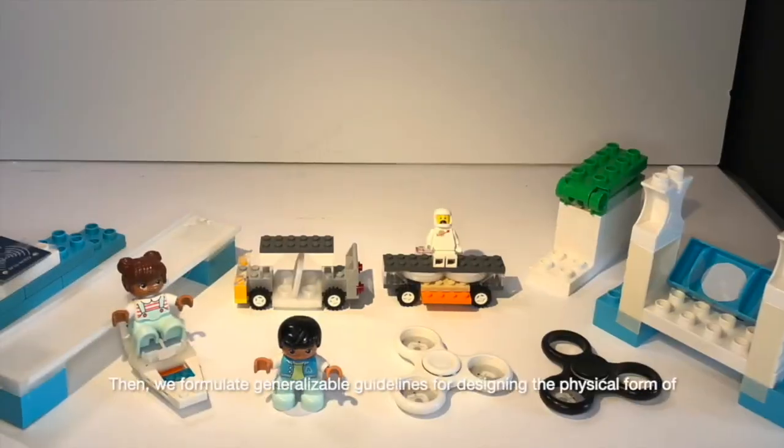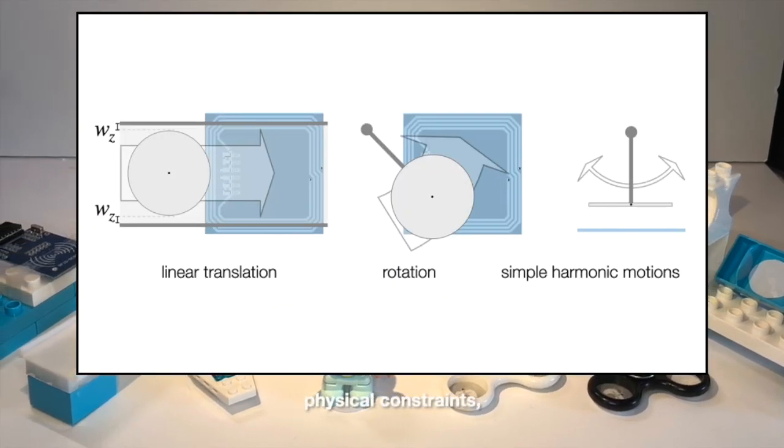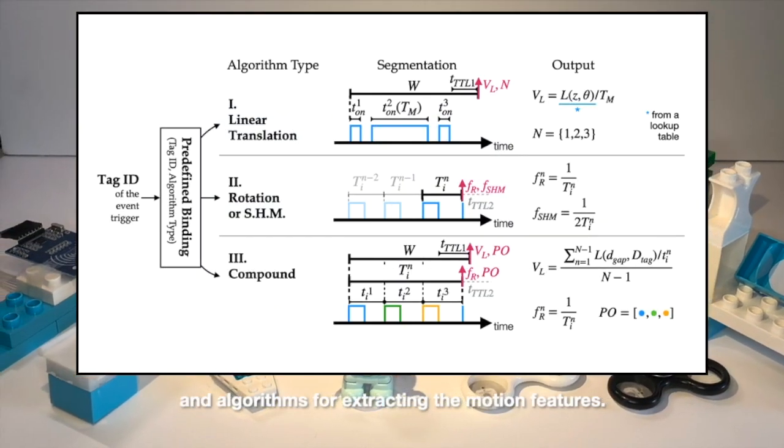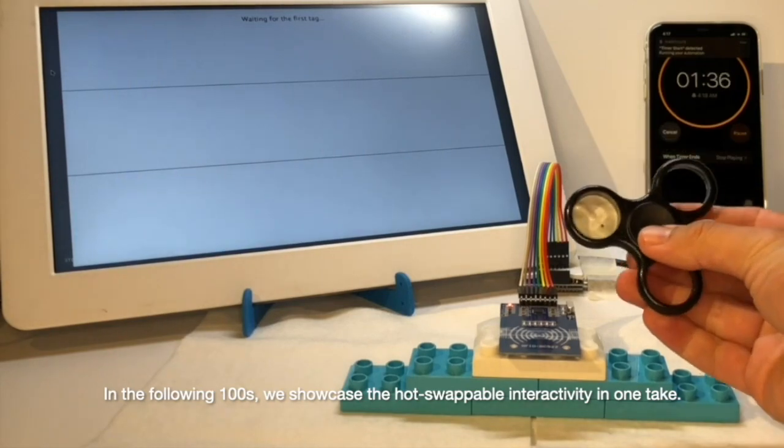Then, we formulate generalizable guidelines for designing the physical form of tag tokens, physical constraints and algorithms for extracting motion features. In the following 100 seconds, we showcase the hot-swappable interactivity in one take.